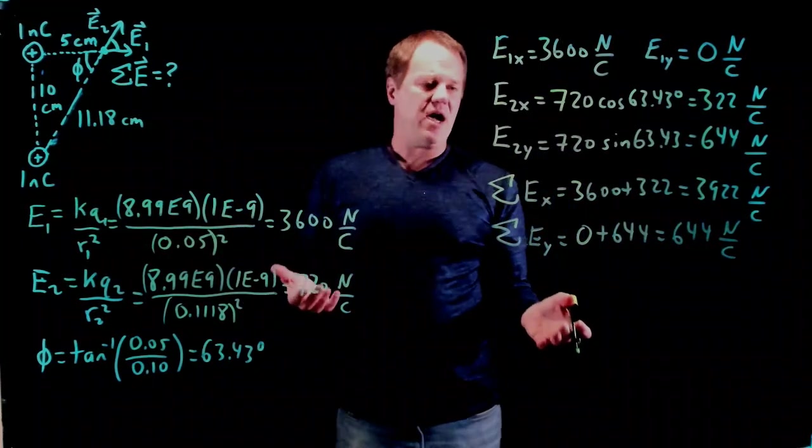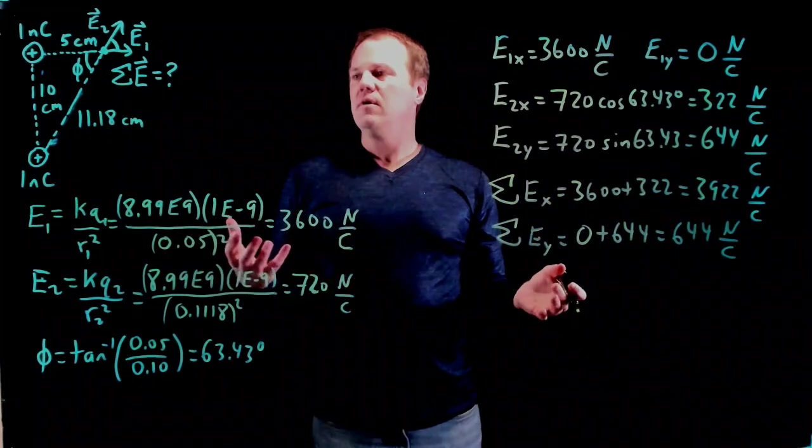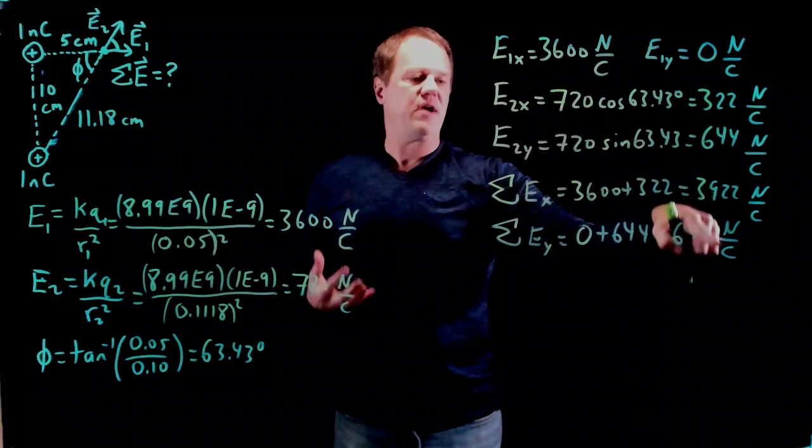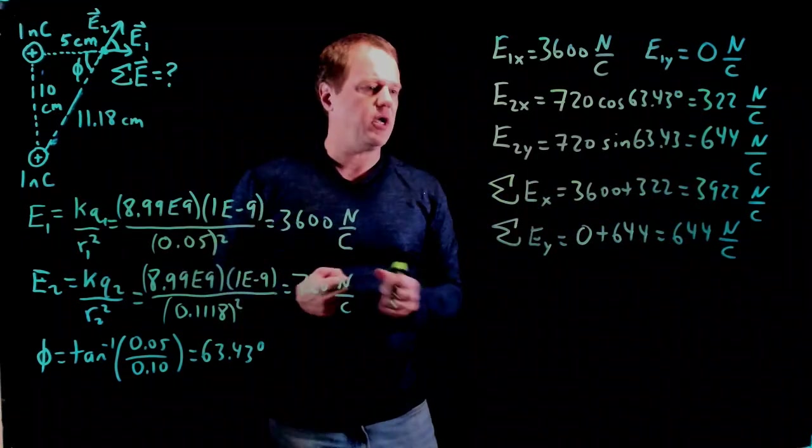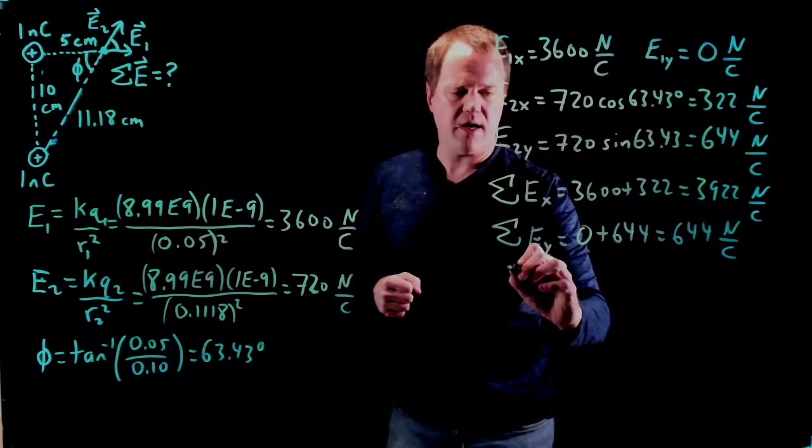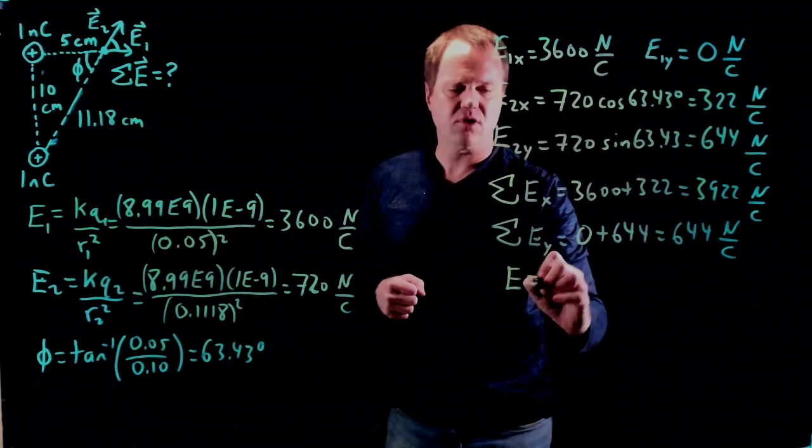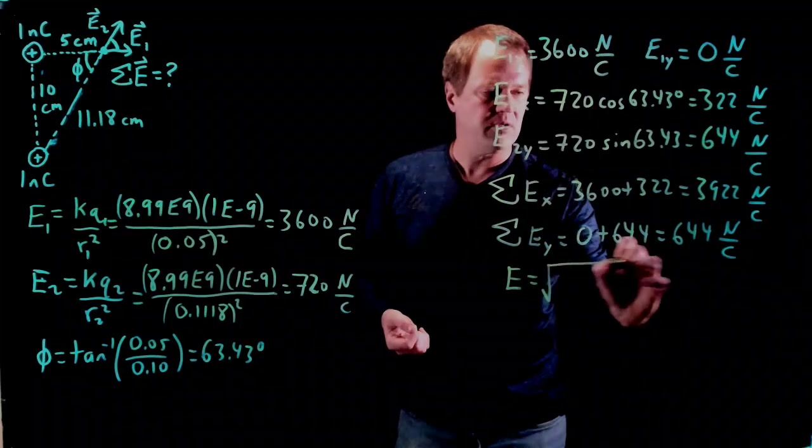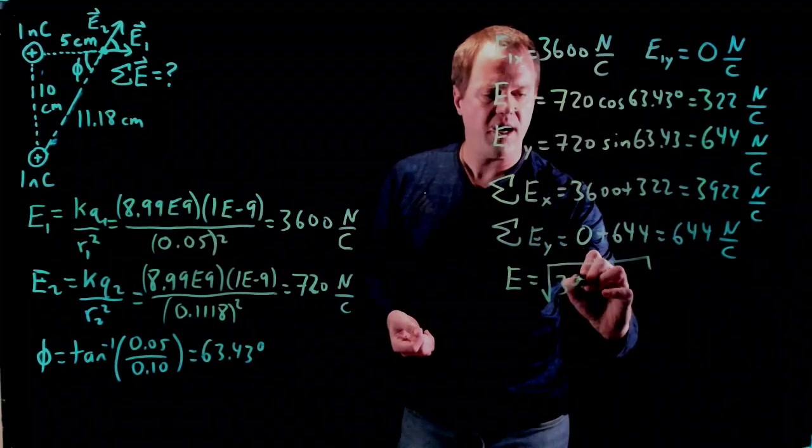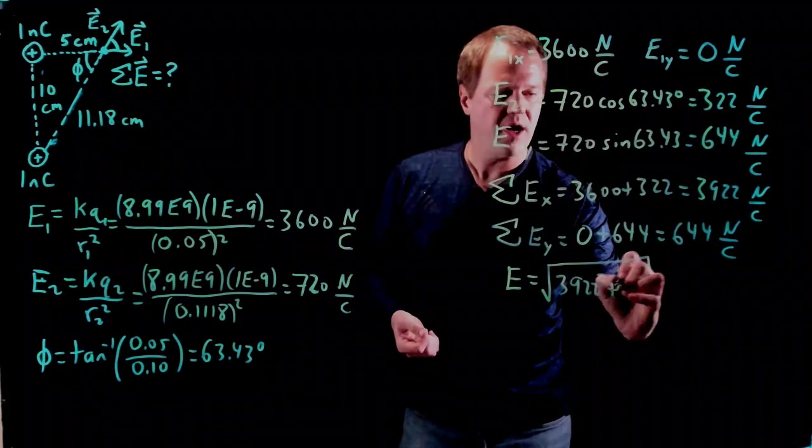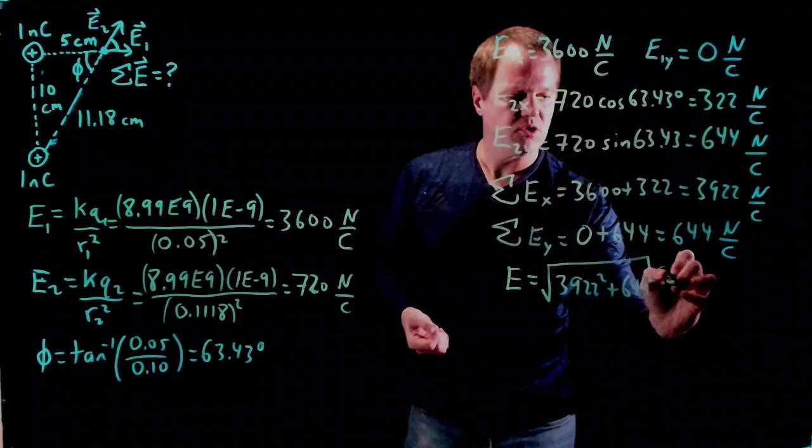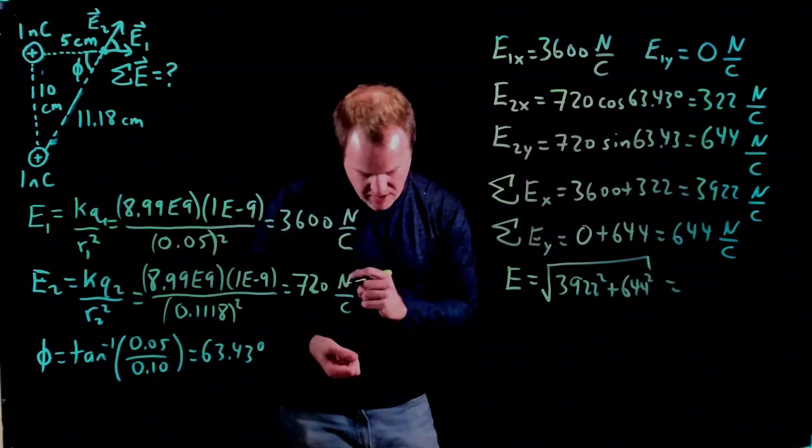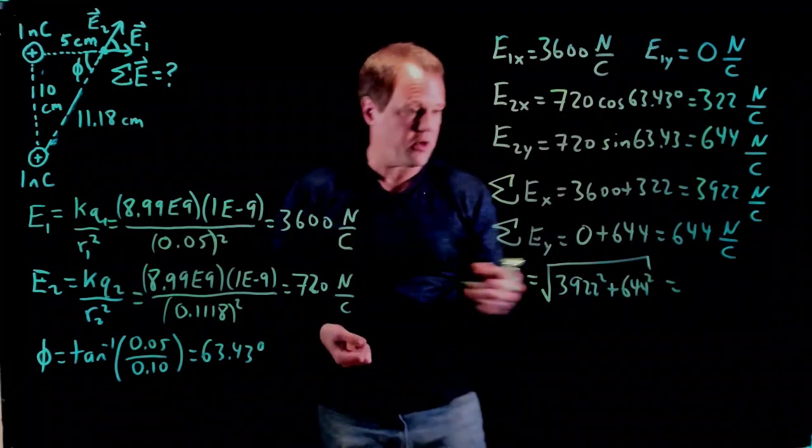I'm basically done. I've described the vector sum in terms of x and y components. We might want to convert this to magnitude and direction. So I'll go ahead and show you how to do that. So E, the net electric field magnitude, would be square root of the sum of the squares. So 3922 squared plus 644 squared. Throw that into my calculator, and it spits out an answer of 3975.